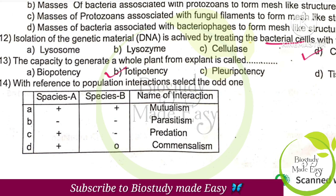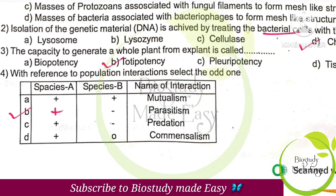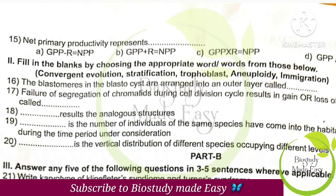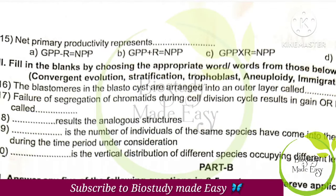With reference to population interaction, select the odd one — option B is the odd one, because in parasitism one organism benefits and the other is harmed, giving a plus-minus relationship. Net primary productivity: the correct representation is option A, because NPP equals GPP minus R.